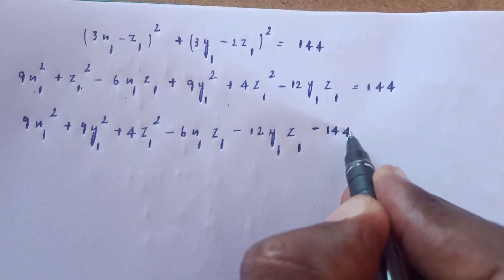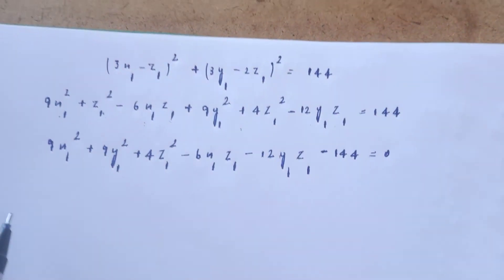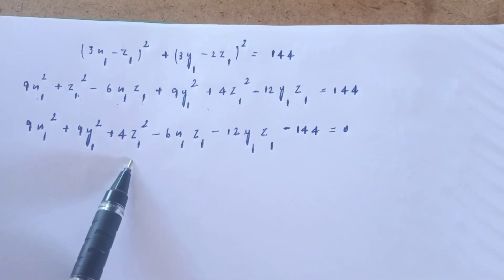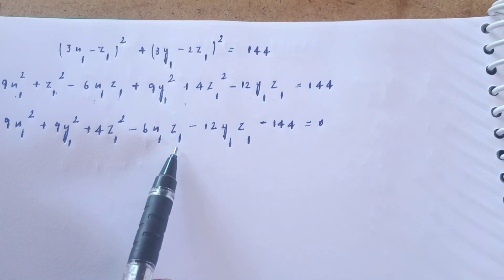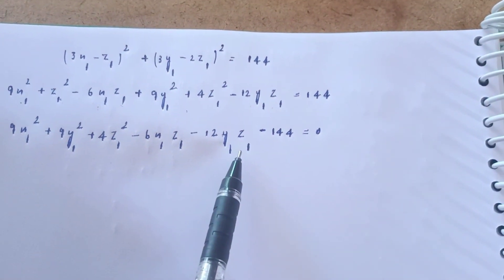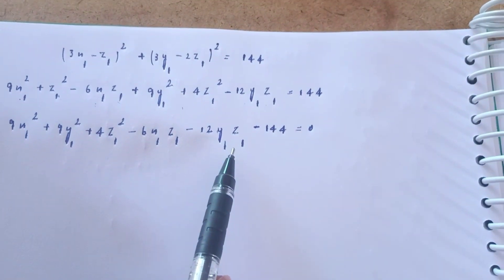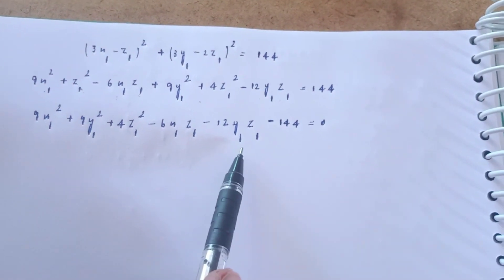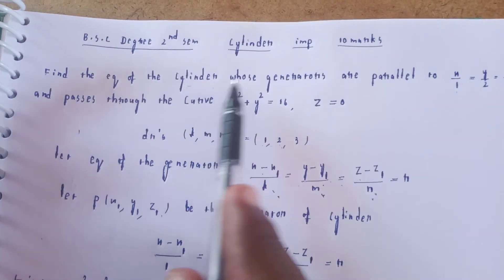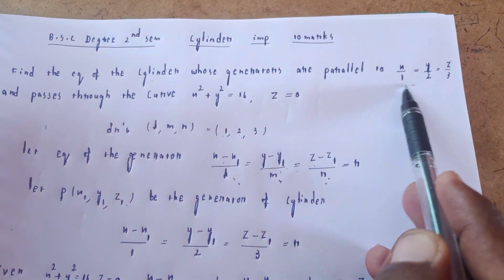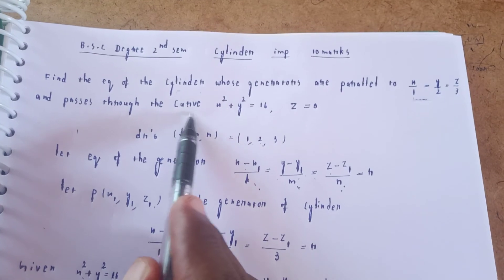This is the cylinder equation. The general form is x² + y² + z² + 2fyz + 2gzx + 2hxy + 2ux + 2vy + 2wz + d = 0, which completes the solution.